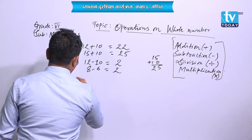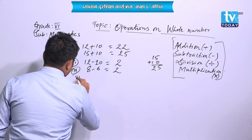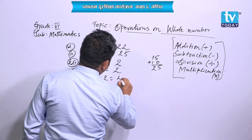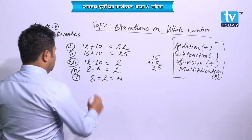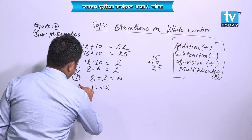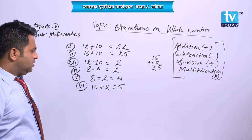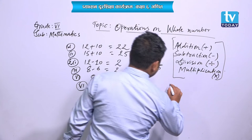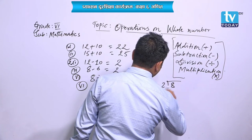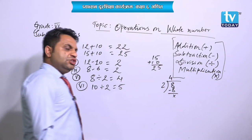The third operation is division. 8 divided by 2 — that means you can write 4. 10 divided by 2 — you can write 5, because 2 fives are 10. If you divide 8 by 2, then 2 goes into 8 four times. In this way, you can divide.